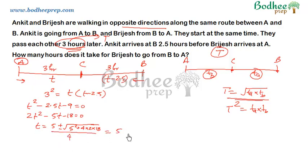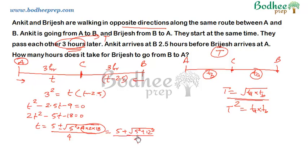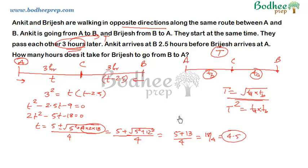Discarding the negative value since time cannot be negative, we get T equals (5 plus square root of 5 squared plus 144) divided by 4. As you can see, 5 and 12 are Pythagorean triplets with 13, so this becomes (5 plus 13) divided by 4, which is 18 divided by 4, or 4.5. So Vijayesh takes 4.5 hours after meeting to reach point A.